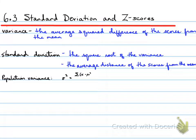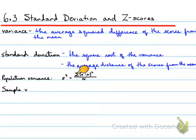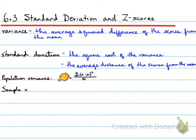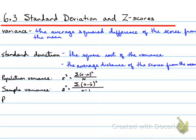Population variance: the formula for population variance is sigma squared equals the sum of each value minus the mean, all squared, divided by the number of values. Population variance is different from sample variance, where the numerator is the same but in the denominator you subtract 1, to account for the difference when calculating sample variance versus population variance.